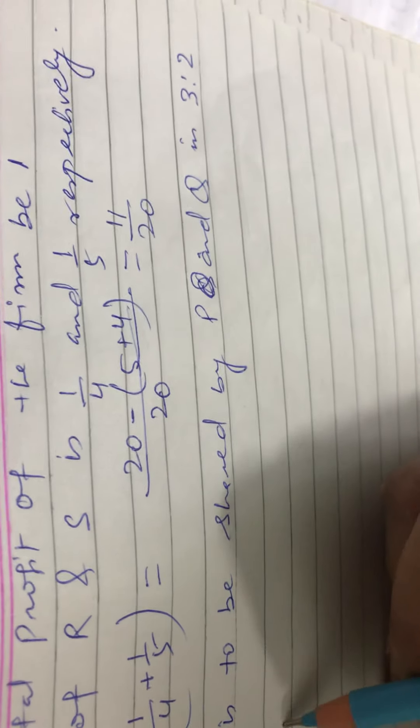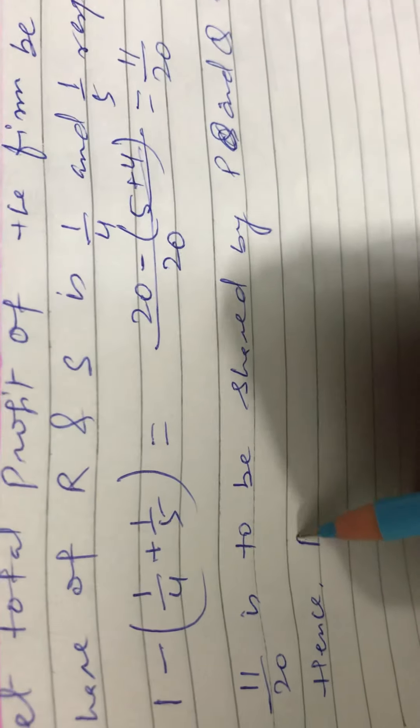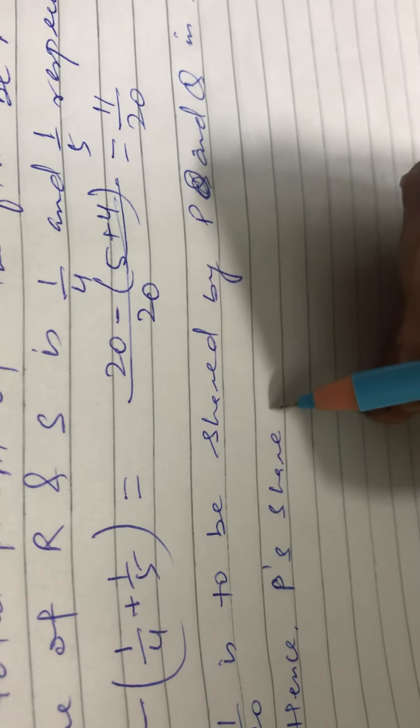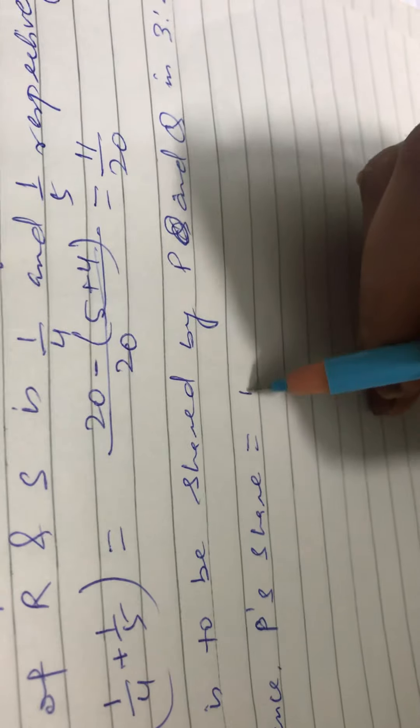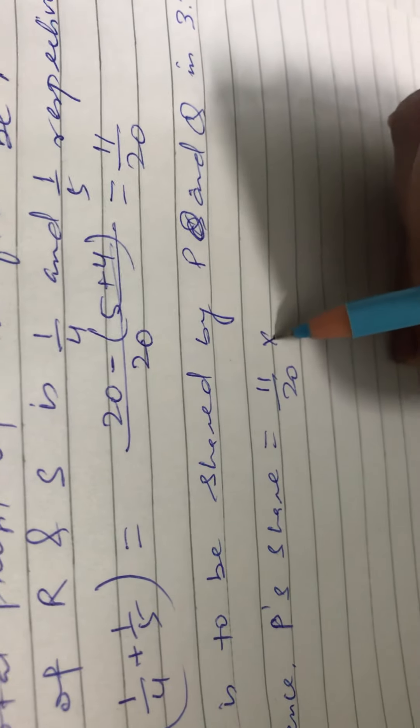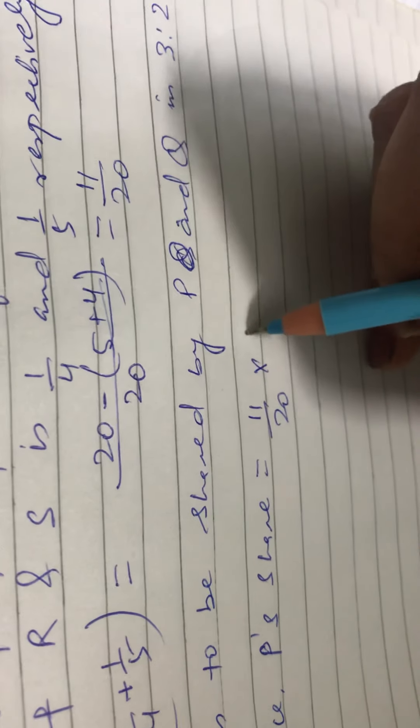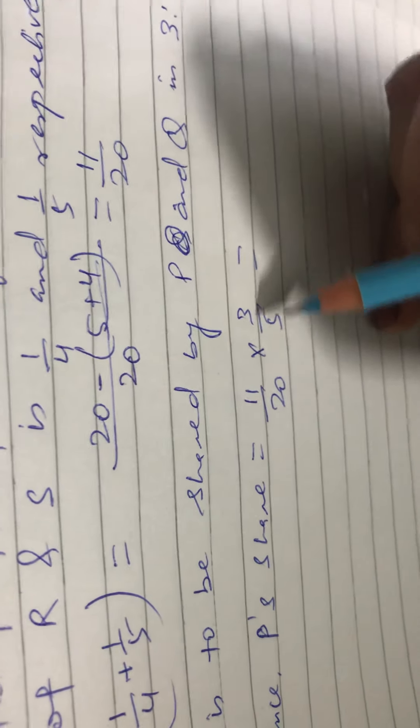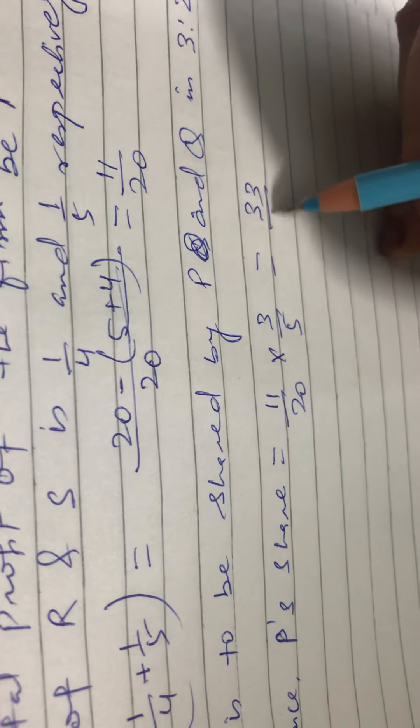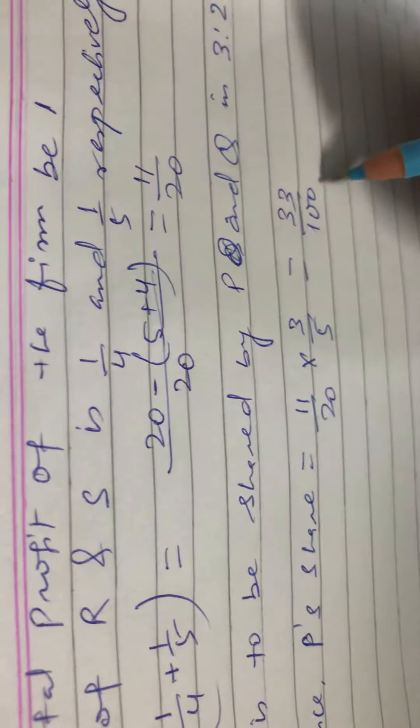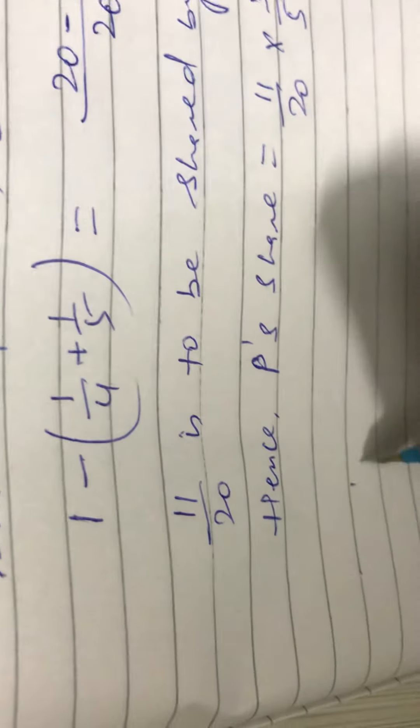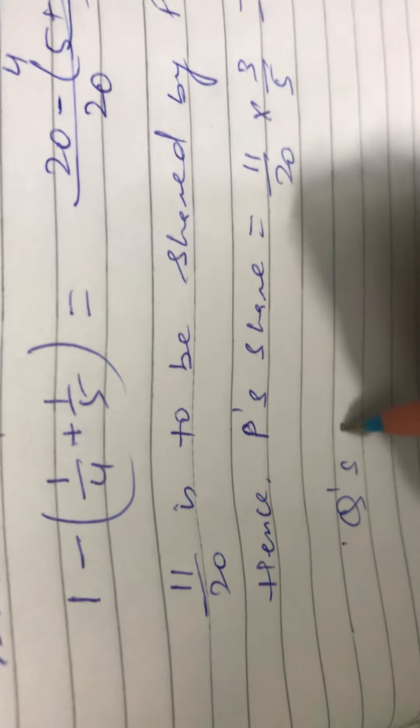Hence P's share will be: P's share is equal to 11/20 into 3/5 is equal to 11 times 3 is 33 and 2 times 5 is 100, so 33/100.